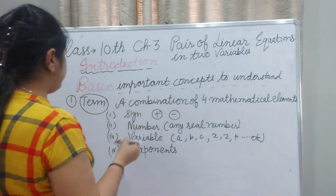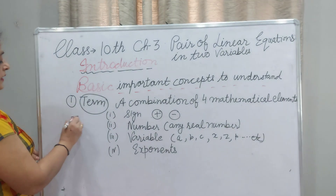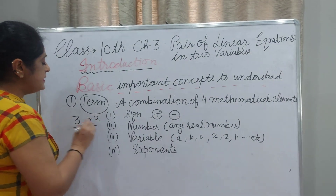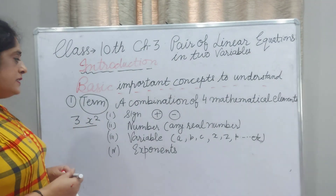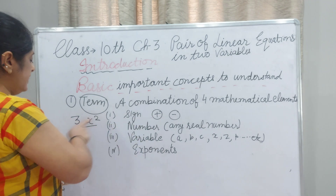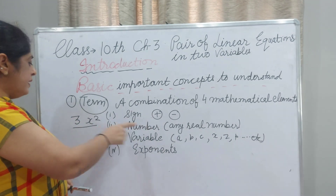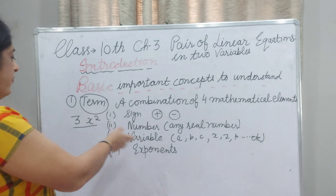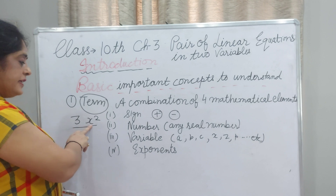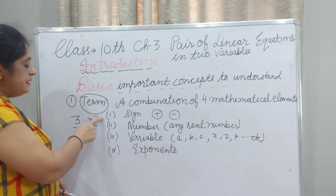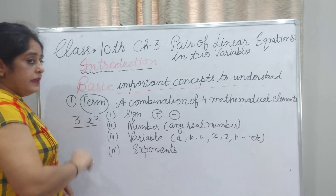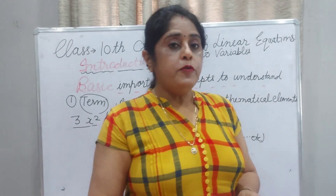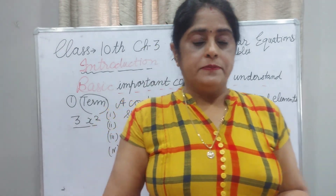For example, 3X² is a term. You can check: there is a sign — it is a positive sign. Number — 3 is a real number. Variable — X is used. Exponent means power — X to the power 2. Hope you understood what a term is.